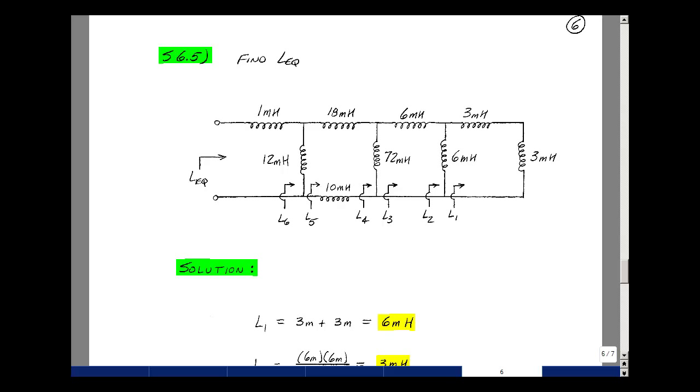This lesson deals with supplemental problem 6.5. You can find this problem in the ECE 201 e-book in the Chapter 6 Supplemental Problems on page 6. Given this ladder network of inductors, could you find the equivalent inductance looking into the terminals?